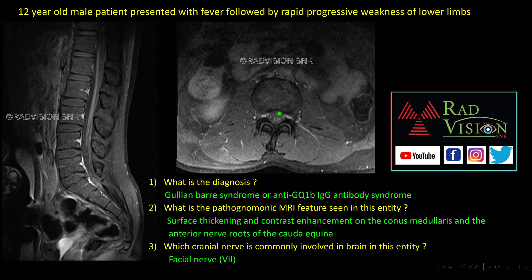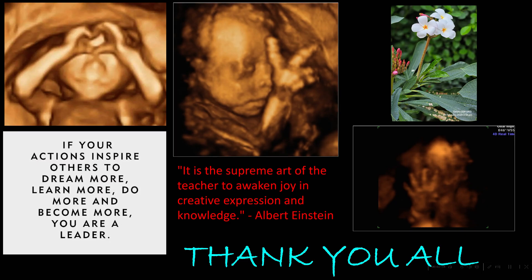If all nerve roots are thickened and enhancing, you can suspect AIDP or CIDP. Also, if there is a completely empty thecal sac and the nerve roots are completely adhered to the thecal sac, you can suspect arachnoiditis — these are the common differential diagnoses. Thank you all.